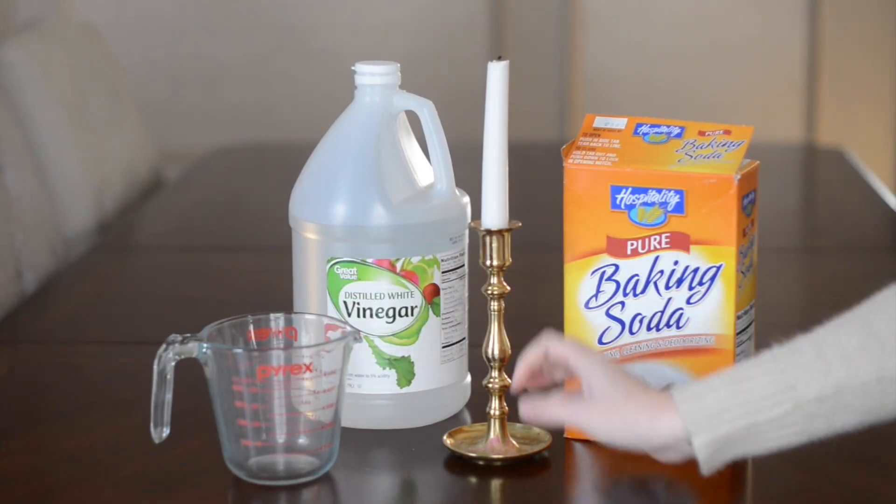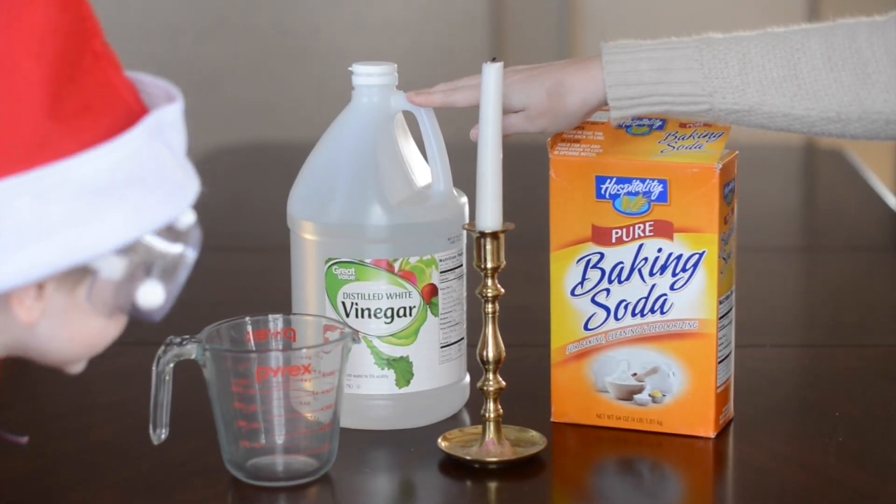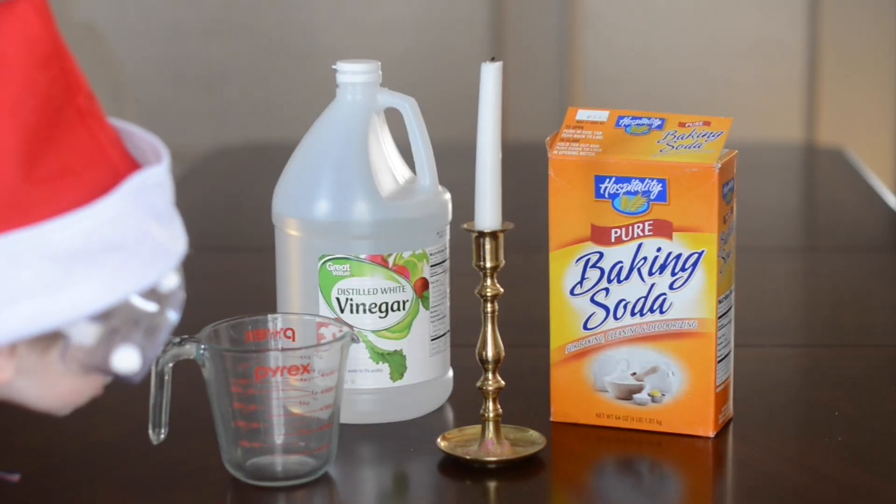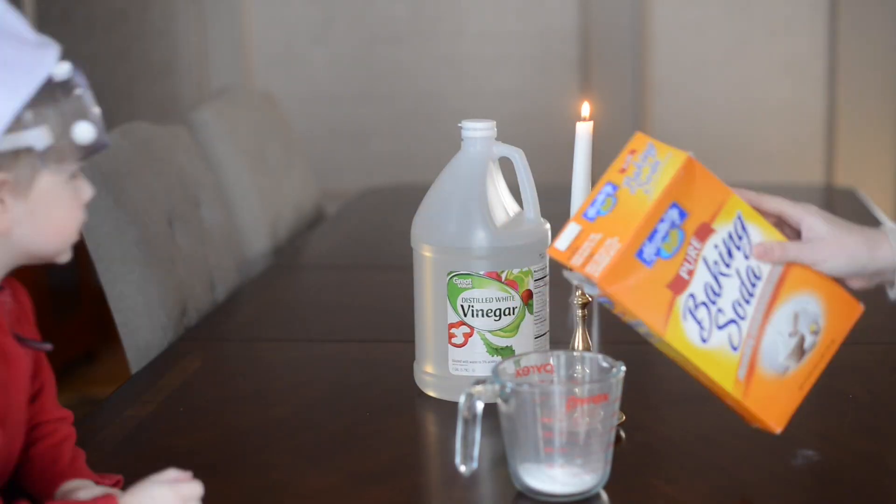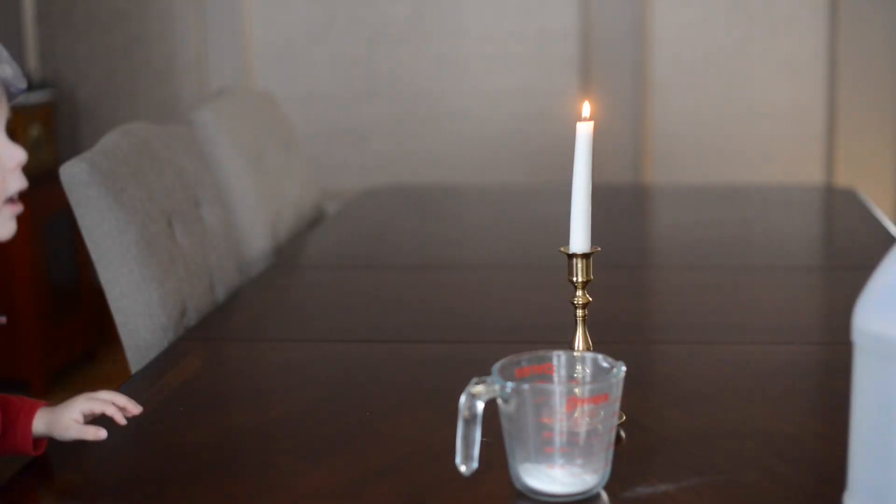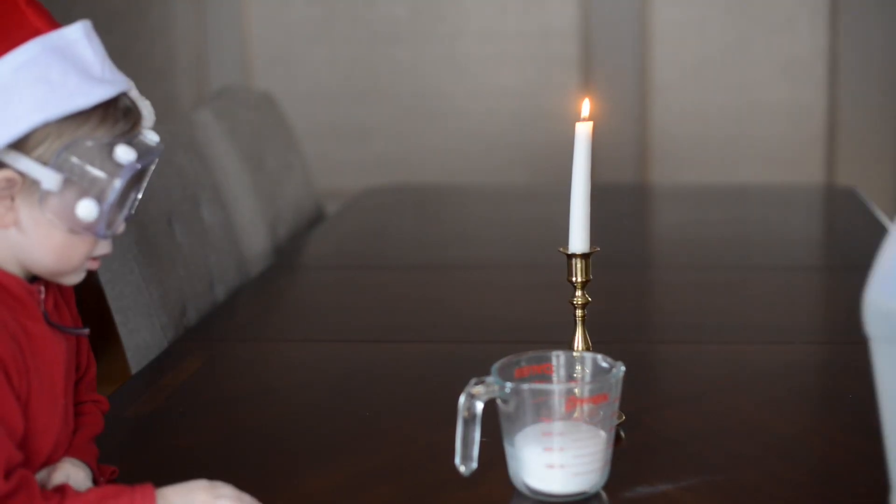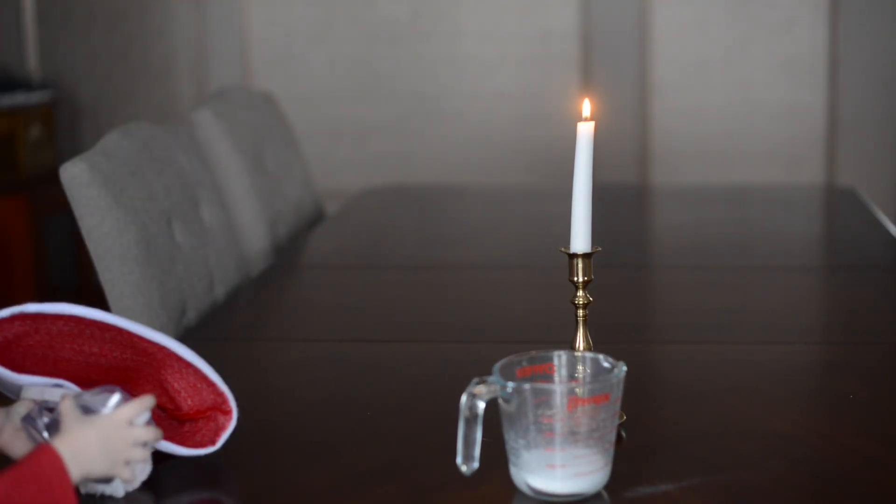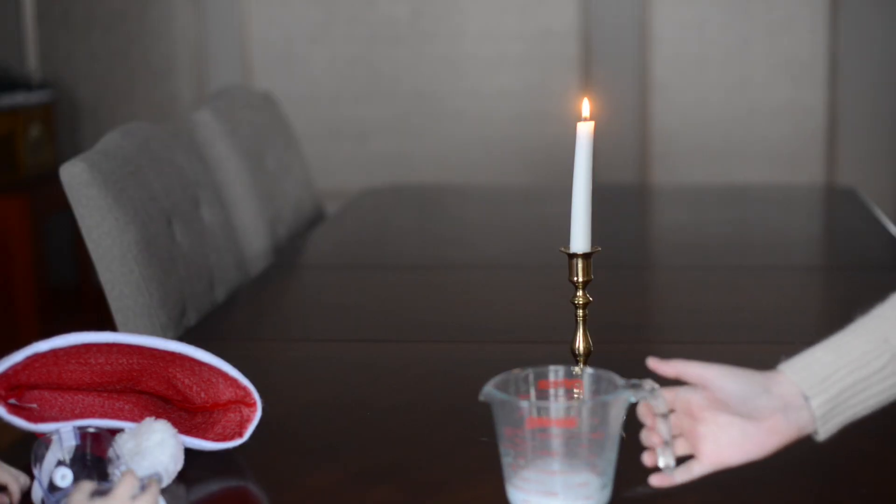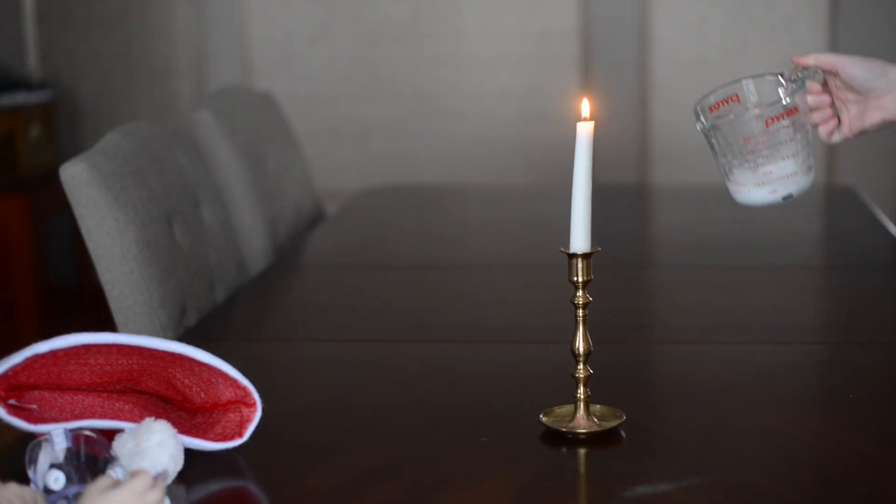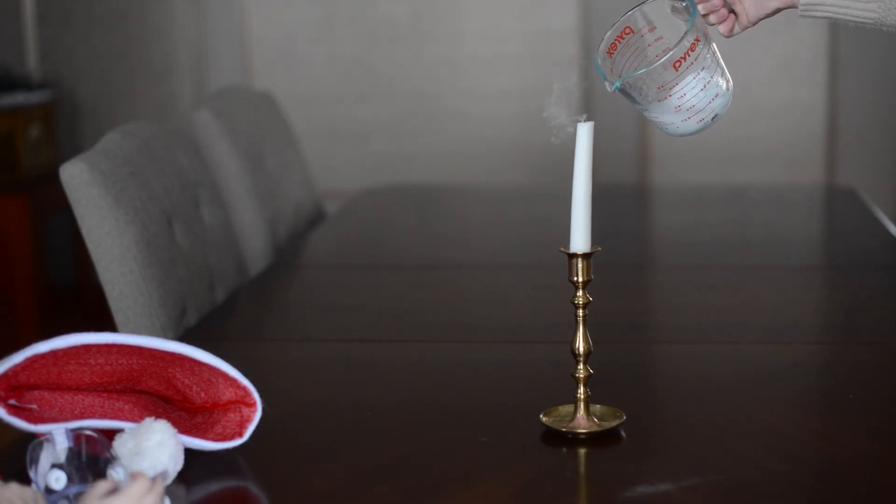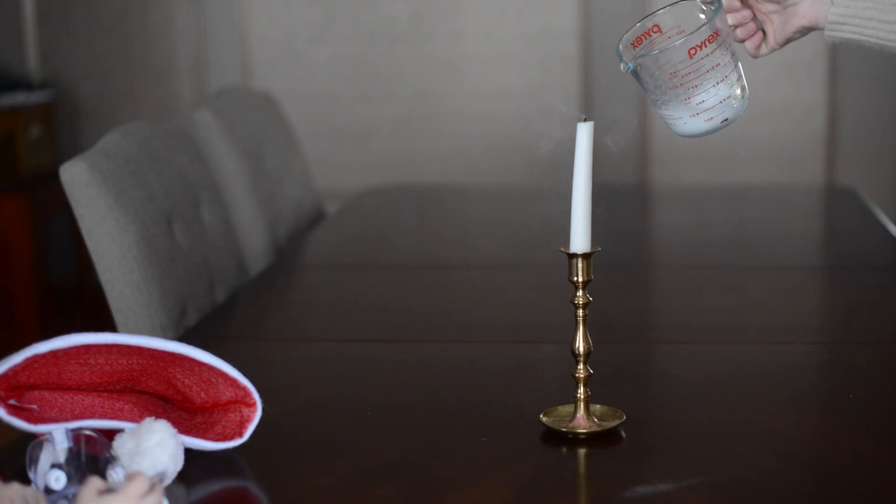What you need for this is a jar, vase, cup, something like that, candle, baking soda, and vinegar. And then you just put some baking soda in your jar and add some vinegar. And then you just pick it up and pour the air on the candle. And it goes out like magic.